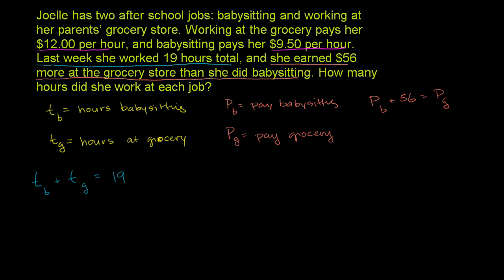Her pay babysitting equals the time babysitting times $9.50 per hour. Her pay at the grocery equals the time at the grocery times $12 per hour. For example, if you make $12 per hour and work 3 hours, you make $36. If you work 2 hours at $9.50, you make $19.